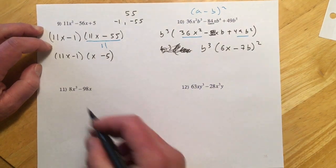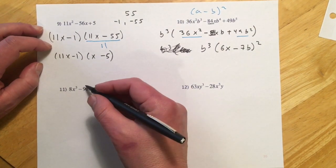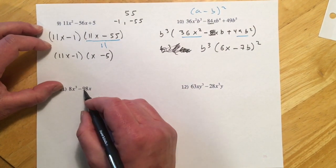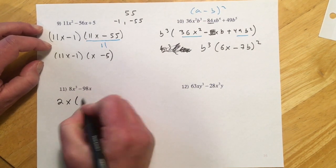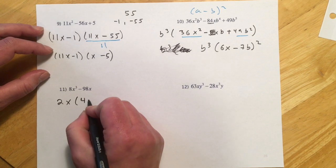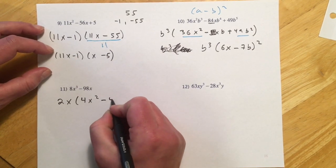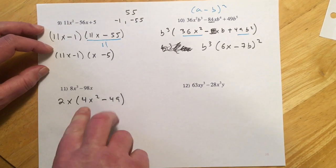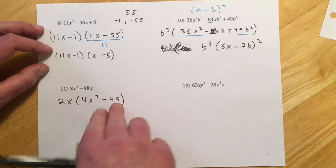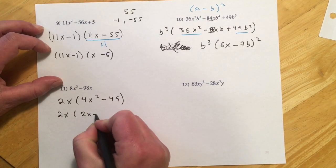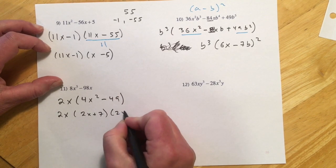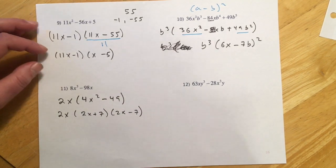Number 11. So GCF again. 98 and 8. I think the best I can do is a 2 and an X. So I'll do a 2X out front. And that's going to leave me a 4X squared minus 49. And I can say I have two terms and they are both perfect squares. So that will be 2X, 2X plus 7, and 2X minus 7.